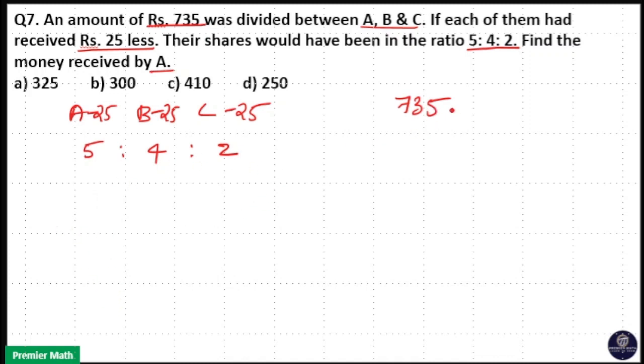That means total money minus 25 plus 25 plus 25, that is 75 (3 into 25), is equal to 5 plus 4 plus 2 parts, that is 11 parts.